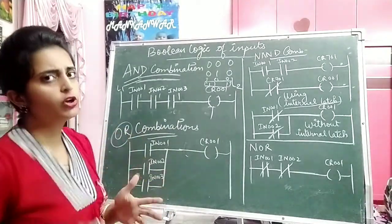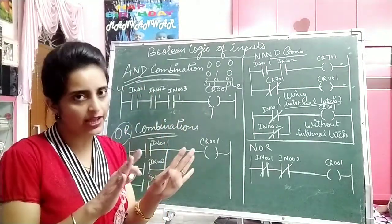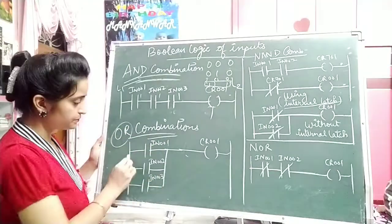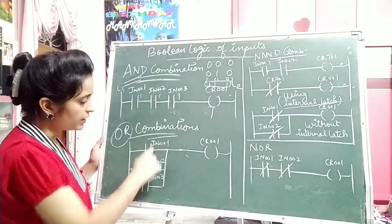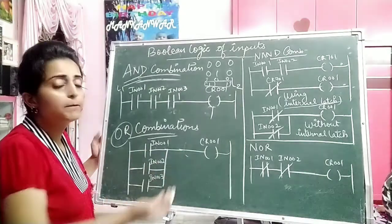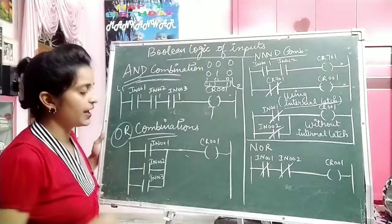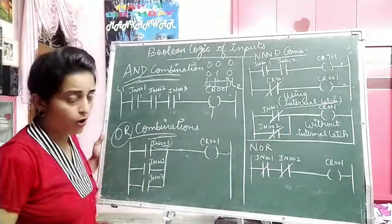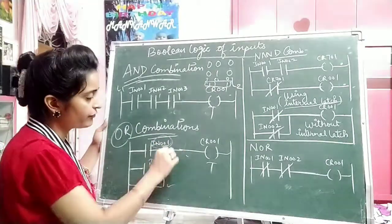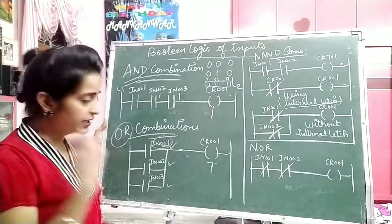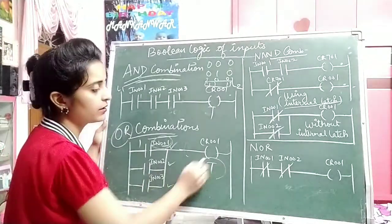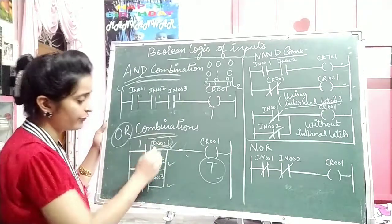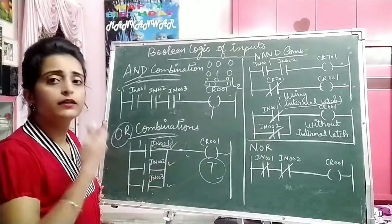The next one is the OR combination. OR means addition — if any one input is high, the output is high. To make an OR combination in ladder logic, we connect the different inputs in parallel. Whenever any one of them gets high at the input, the output will be true. This parallel combination of inputs behaves like an OR operation.